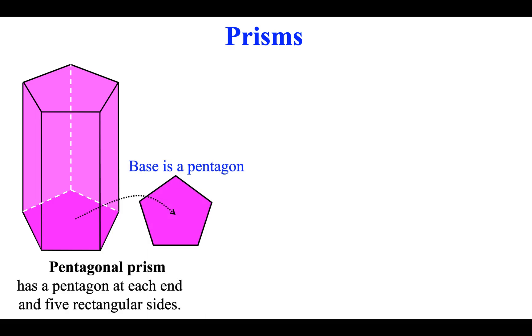Pentagonal prism has a pentagon at each end and five rectangular sides.